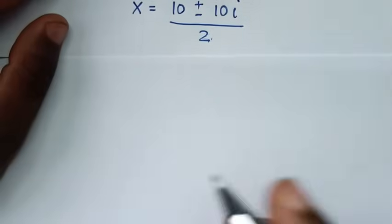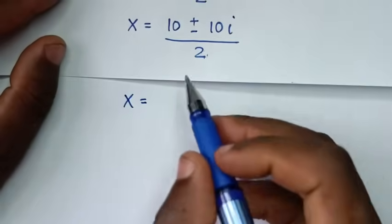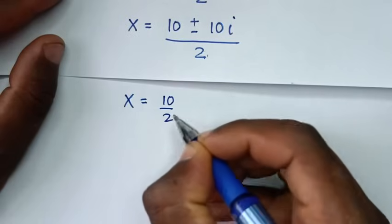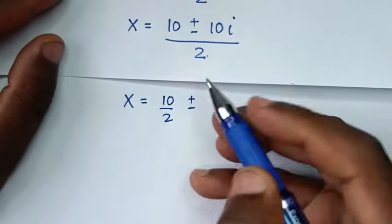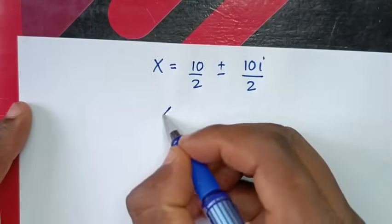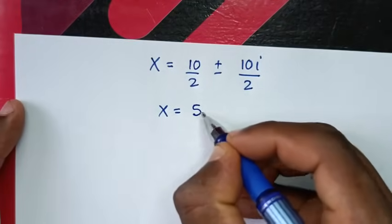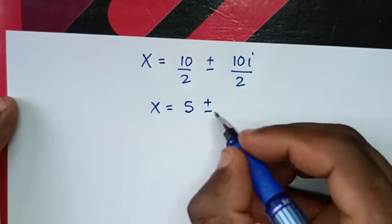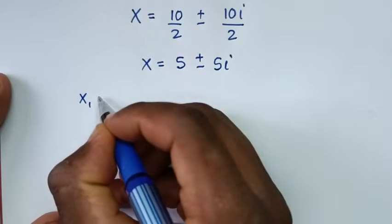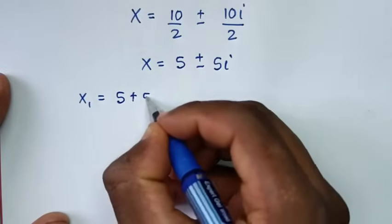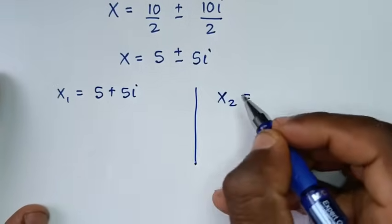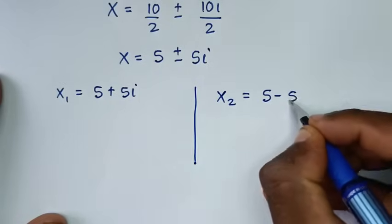In the next step, we divide each part by 2: 10 over 2 is 5, and plus or minus 10i over 2 is plus or minus 5i. So we have two values of x: the first value x₁ is equal to 5 plus 5i, and the second value x₂ is equal to 5 minus 5i.